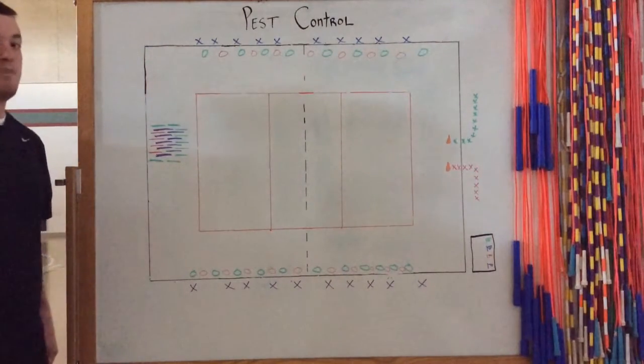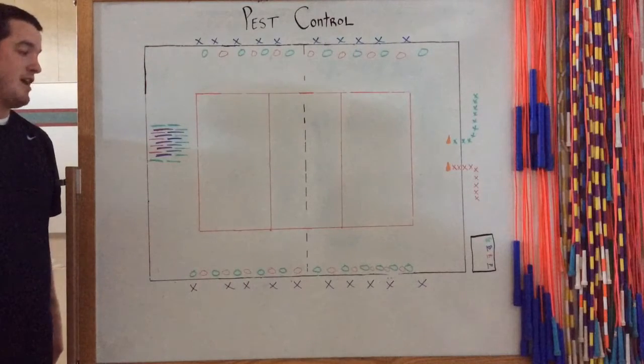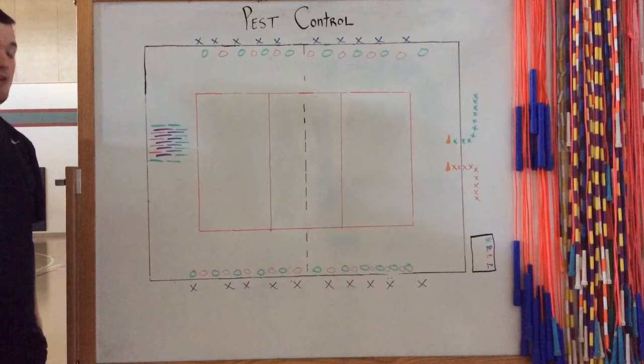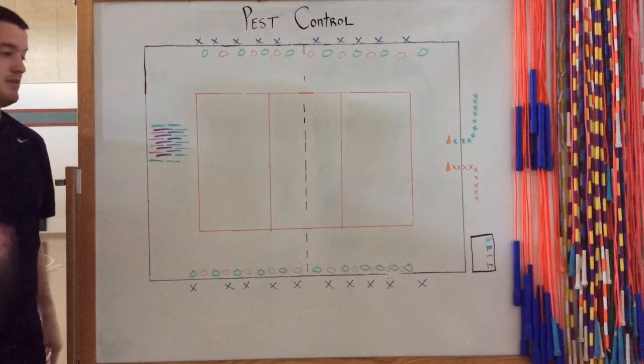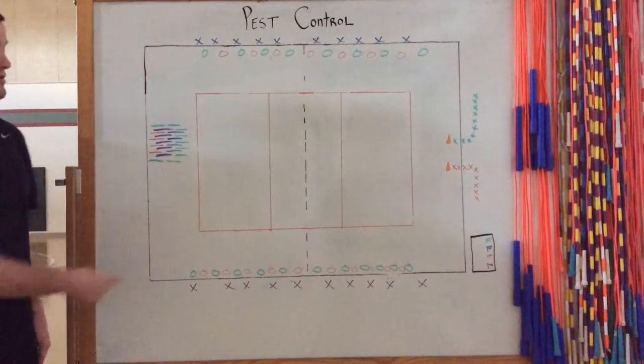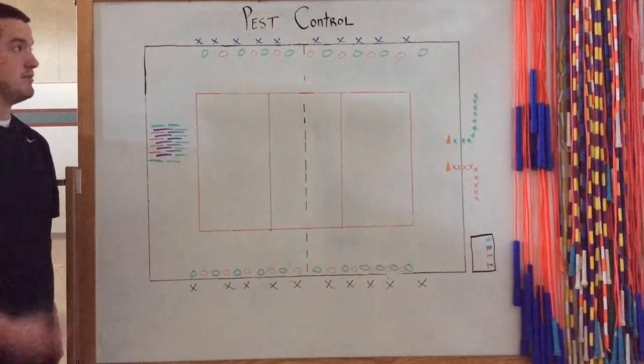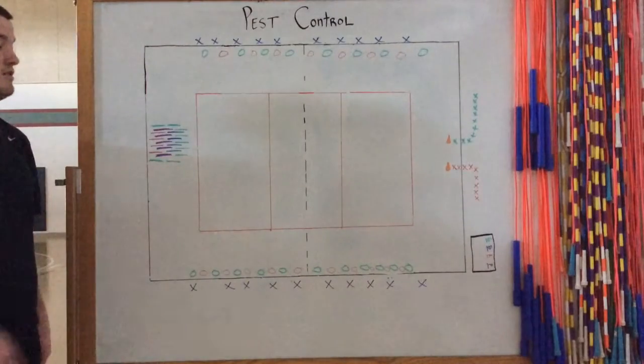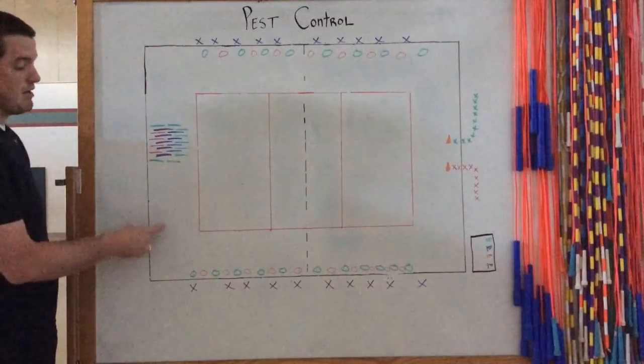Okay guys, the game I have for you is Pest Control. Here's how Pest Control works: When the students come into the classroom, right as they're walking through the door, I'll assign them a jersey color. I usually have my jerseys over here by the door, and I'll simply go blue, purple, red, green, and just repeat.